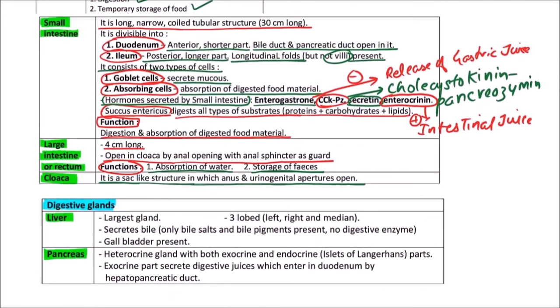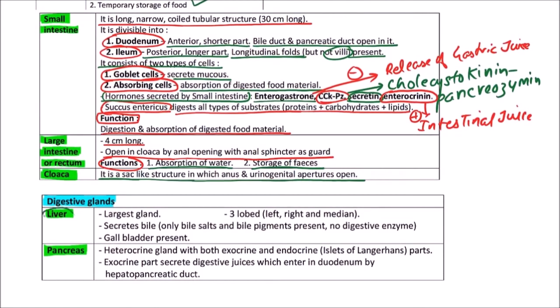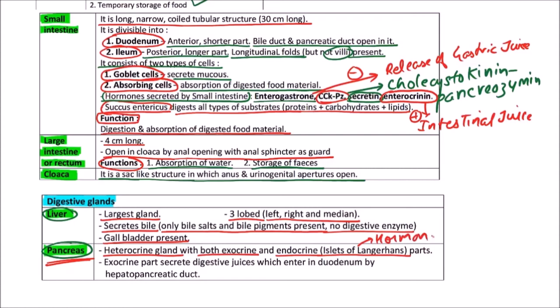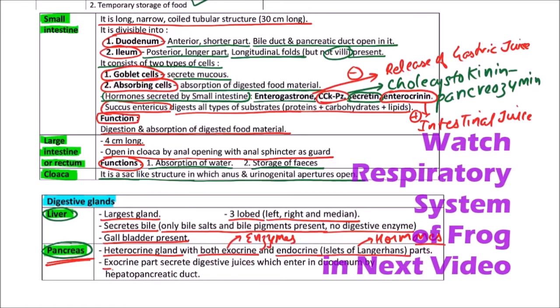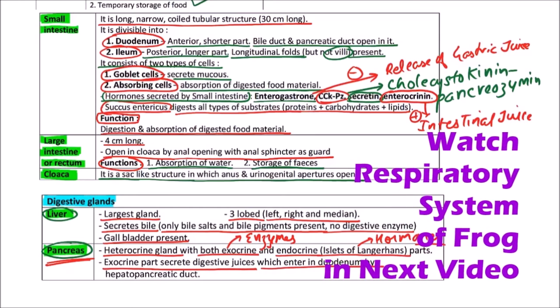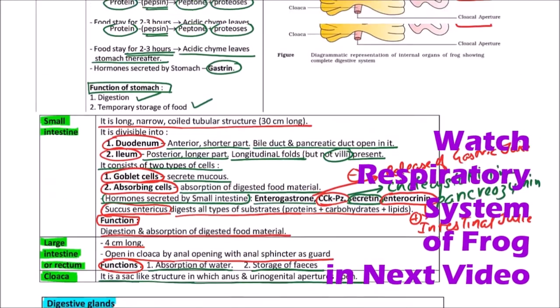Next is digestive glands. There are two major digestive glands: liver and pancreas. Liver is the largest gland of body. It is three-lobed: left, right, and median. It secretes bile with only bile salts and bile pigments present but no digestive enzyme. Gallbladder is present. Pancreas is considered a heterocrine gland with both exocrine and endocrine function. For endocrine function, islets of Langerhans are there which secrete hormones. Exocrine part secretes digestive juices which enter the duodenum by hepatopancreatic duct.